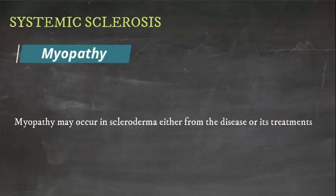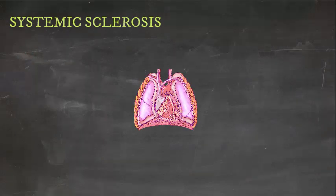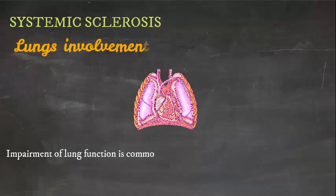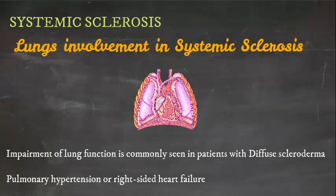Myopathy may occur in scleroderma either from the disease or its treatments. Impairment of lung function is commonly seen in patients with diffuse scleroderma. In advanced disease, patients may develop pulmonary hypertension and even right-sided heart failure.